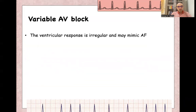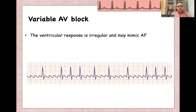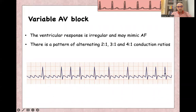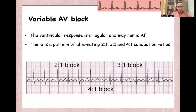Variable AV block produces an irregular ventricular rate and can mimic atrial fibrillation. You may even find alternating 2-to-1, 3-to-1, and 4-to-1 AV block in the same patient.